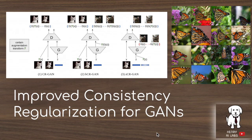Thanks for watching this explanation of improved consistency regularization for GANs. We've seen many recent advances in semi-supervised learning with FixedMatch and SimCLR, and it's interesting to see this applied to GANs with further refinements. This technique is easy to understand compared to things like weight demodulation, path length normalization in StyleGAN2, or spectral normalization, and can be stacked on top of other generative adversarial network techniques. Please subscribe to Henry AI Labs for more deep learning and AI videos.